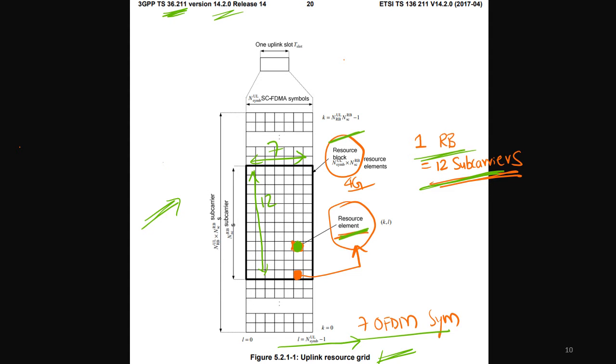Such a kind of grid, whatever is shown, will constitute one particular slot in case of 4G. The definitions are slightly different in case of 5G, but the concept is very similar.